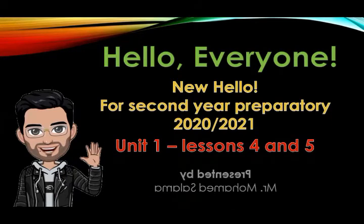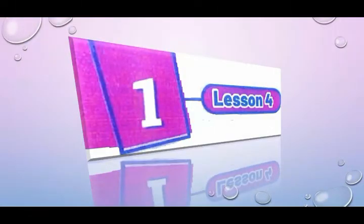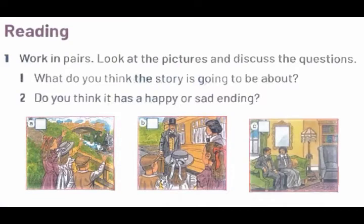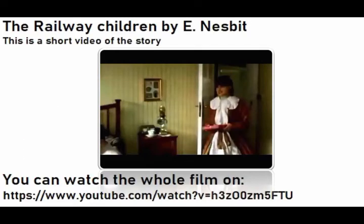Hello everyone, this is Mr. Mohamed Salama, and I'm going to introduce to you New Hello for second year preparatory, unit one, lessons four and five. Let me start with lesson four, unit one. This lesson starts with a reading. You have to work with your partner to look at these pictures and discuss these questions. Think first about what you think the story is going to be about, and discuss whether it has a happy or a sad ending. The story is called The Railway Children by E. Nesbit. This is a short video of the story and you have to watch it first before we continue.